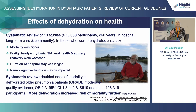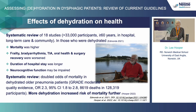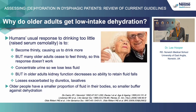These are two systematic reviews looking at the effects of dehydration on health in older adults. They find that those who are dehydrated have high levels of mortality, frailty, bradyarrhythmia, TIA — oral health and surgery recovery were poorer, duration of hospital stay was longer, and neurocognitive function may be impaired. Our own systematic review looked at the risk of mortality in older adults with pneumonia, and if you have dehydration alongside your pneumonia, your odds of mortality in the next 30 days are more than doubled. So there are some really big health impacts from dehydration, and it's common in older adults.